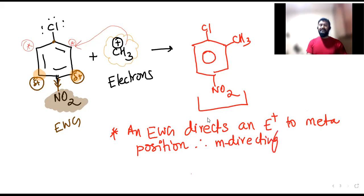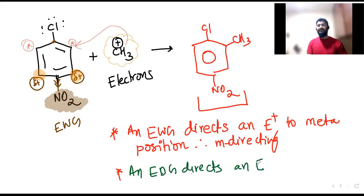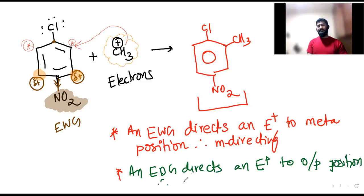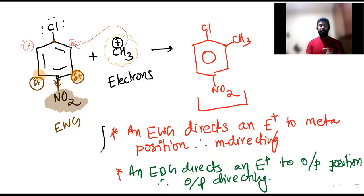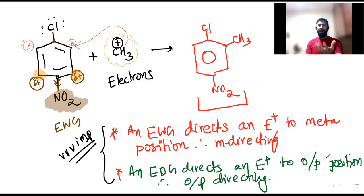Similarly, an electron donating group directs an incoming electrophile to ortho or para positions — preferably para, because para has less steric repulsion. Therefore electron donating groups are called ortho/para-directing groups. Please take note of these two key statements as they are very important for solving problems.